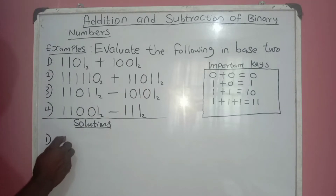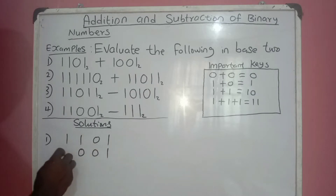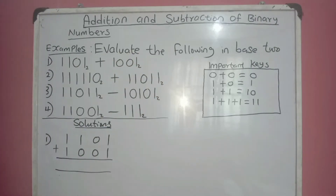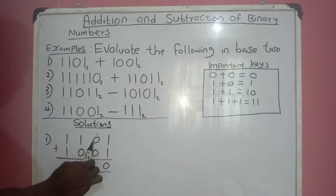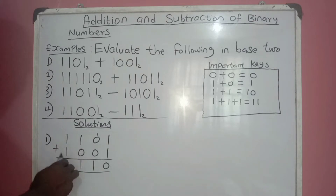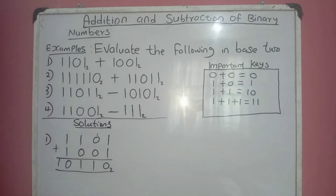Let's do the addition of 1101 base 2 and 1001 base 2. Remember our keys: 1 plus 1 is 10, so we write 0 and carry 1. Then 1 plus 0 plus 0 gives us 1. 1 plus 0 gives 1. Then 1 plus 1 is 10. So this is our answer in base 2.